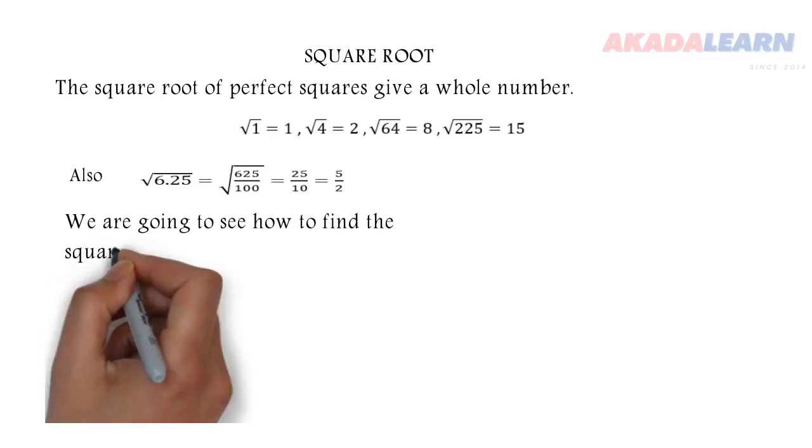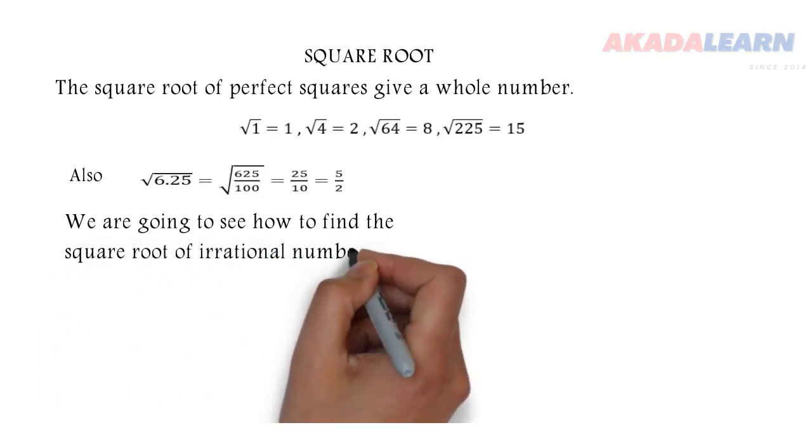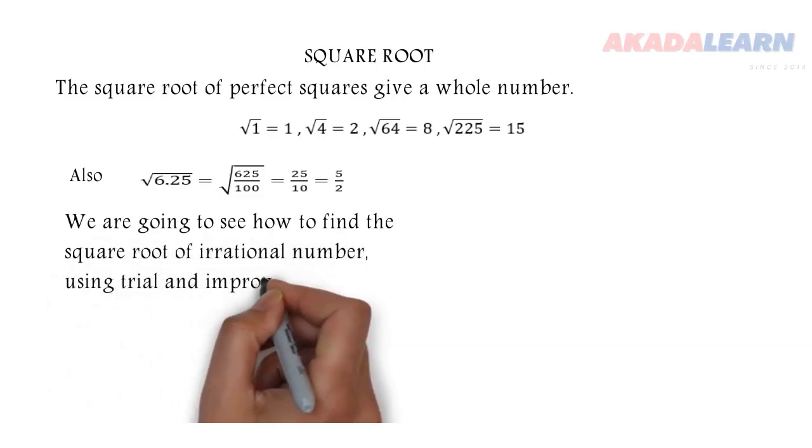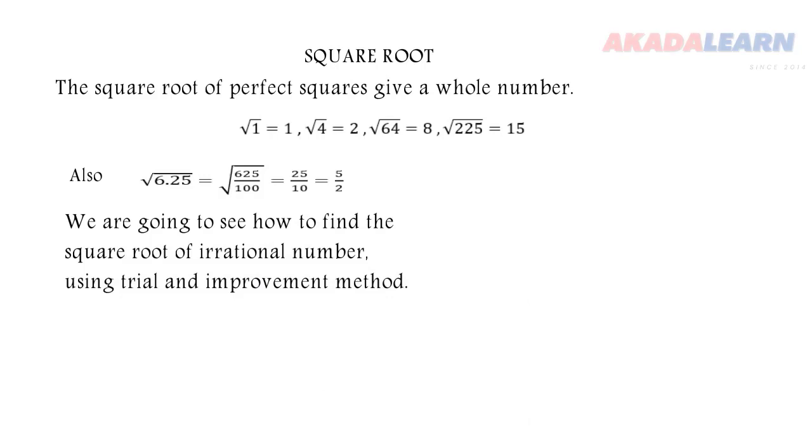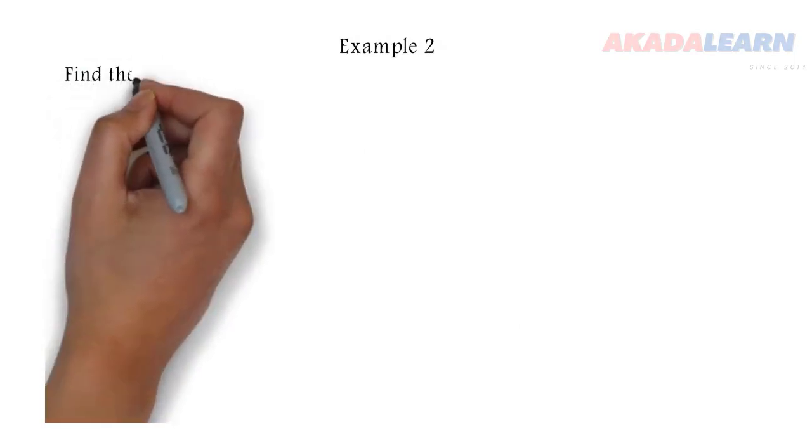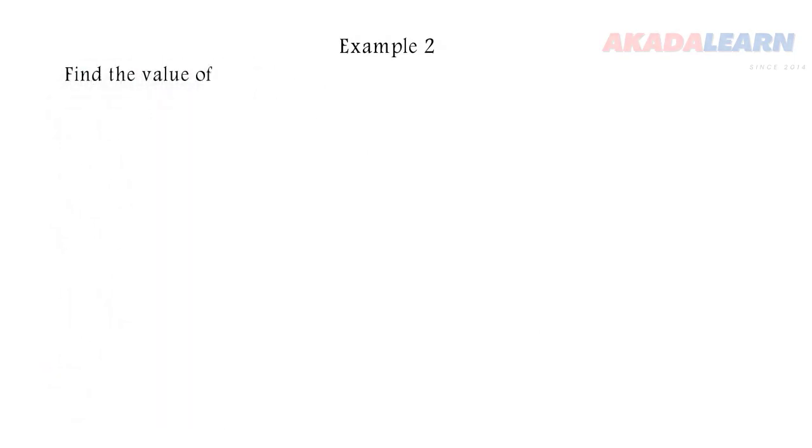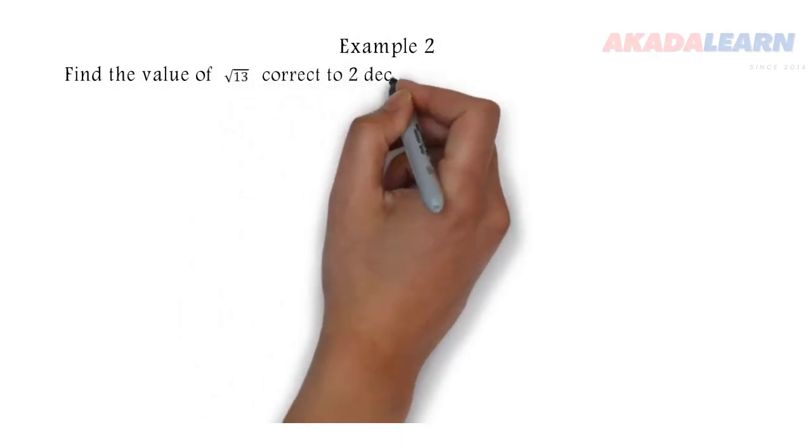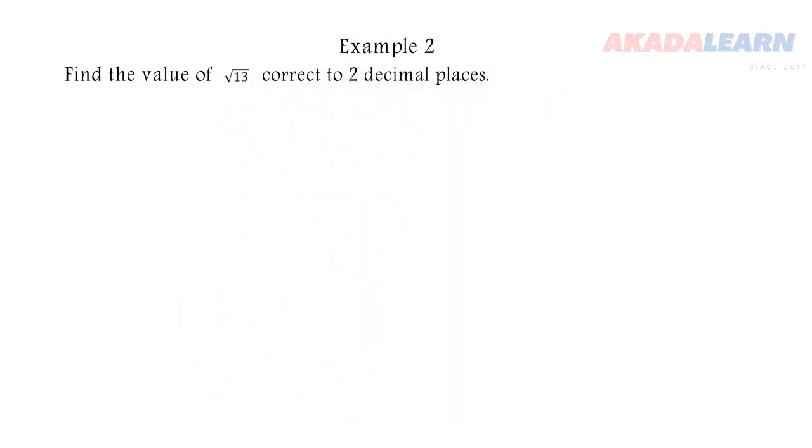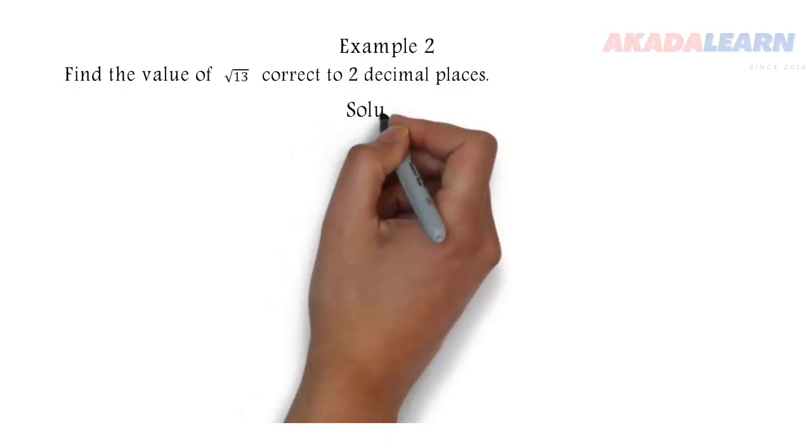So we are going to see how to find the square root of irrational numbers using the method of trial and improvement. So let's see that with an example. We are asked to find the value of the square root of 13 correct to two decimal places. 13 is not a perfect square, so let's see how to do that.